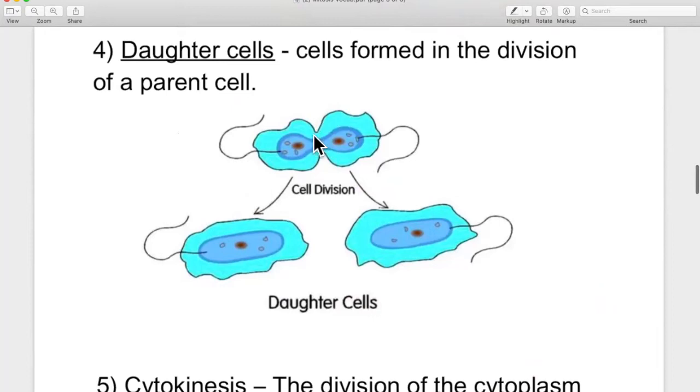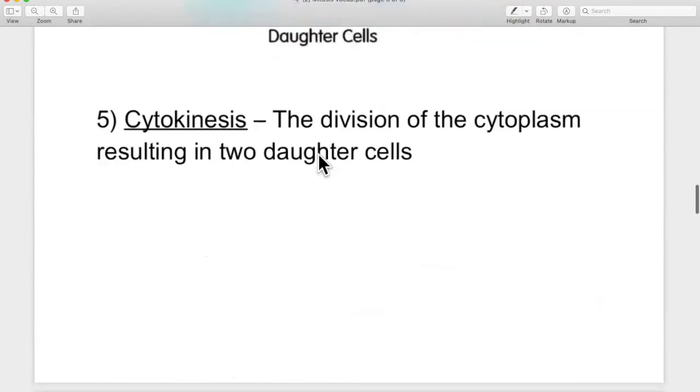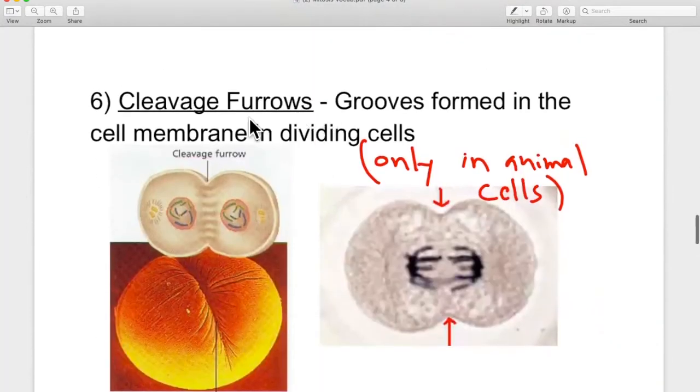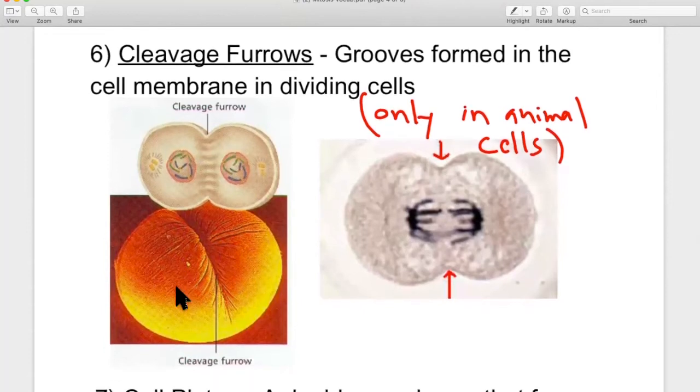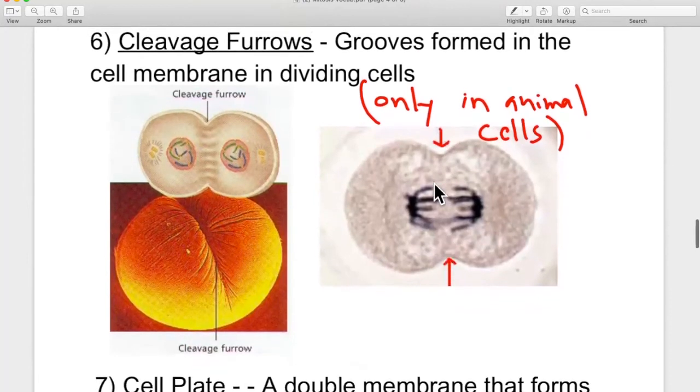That form of cytokinesis, this is called a cleavage furrow. The bend forming in this cell. Cleavage furrows, grooves formed in the cell membrane in dividing cells. That's what this is. This cell is bending in the middle. This is a real picture, by the way, of a cell in what we call a scanning electron microscope. It looks cartoony because the color was digitally added in later. The real picture is black and white. But it's really happening in this picture. A real cell is splitting down the middle. This is another one from a light microscope that we would have in a classroom, splitting down the middle.